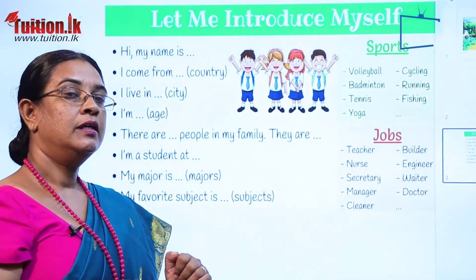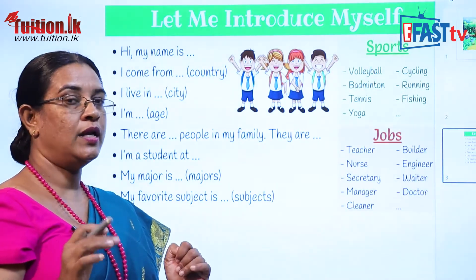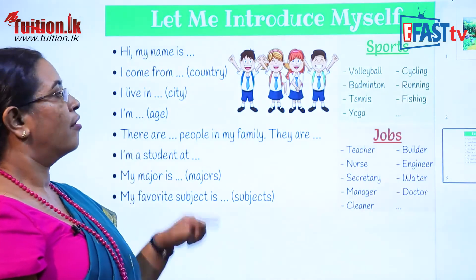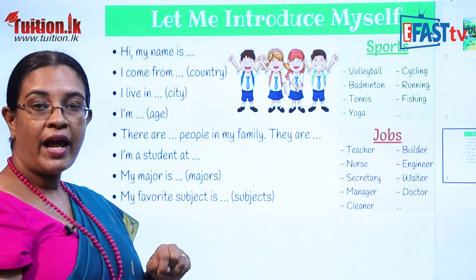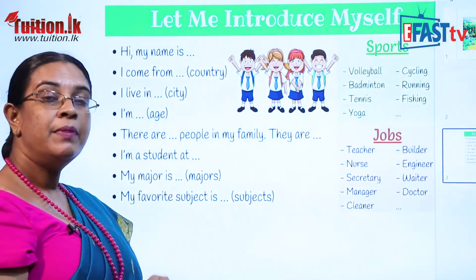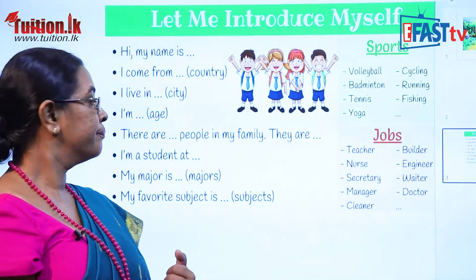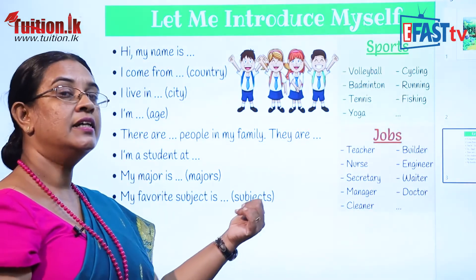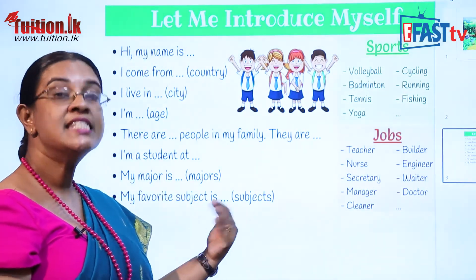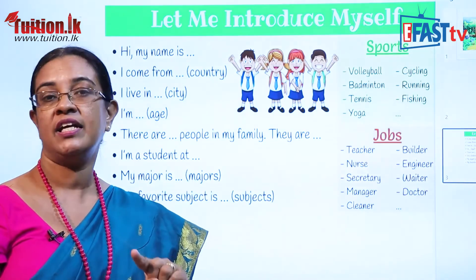Suppose you are Nimal, and your school is Karnangara College, and you are seven years old. Hi, my name is Nimal. I come from Sri Lanka. I live in Borella. I am seven years old. There are five people in my family — they are my mother, my father, my brother, my sister and me. I am a student at Karnangara College. My major is swimming. My favorite subject is English. So that is Nimal's details. Now you must be able to tell about yourself like that.